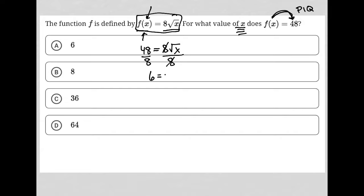I'd have 6 is equal to the square root of x. I can then square both sides, and that would lead me to having 36 is equal to x because the square root of x squared is just x itself. So our correct answer here is choice C.